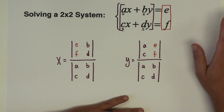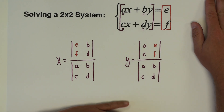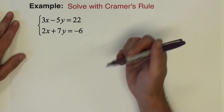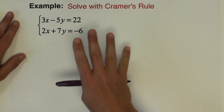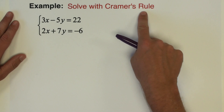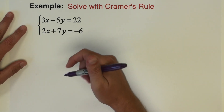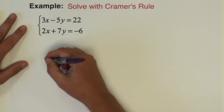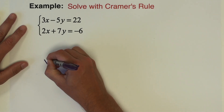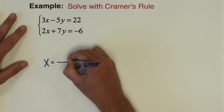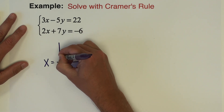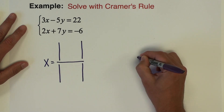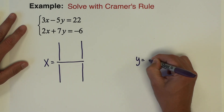Let's do a couple of example problems to get the hang of this. We have a system of equations with two variables x and y — a pretty standard looking problem. I'm going to solve this with Cramer's Rule. The first thing I'll do is set up my x and y fractions, each as a fraction of two by two determinants.